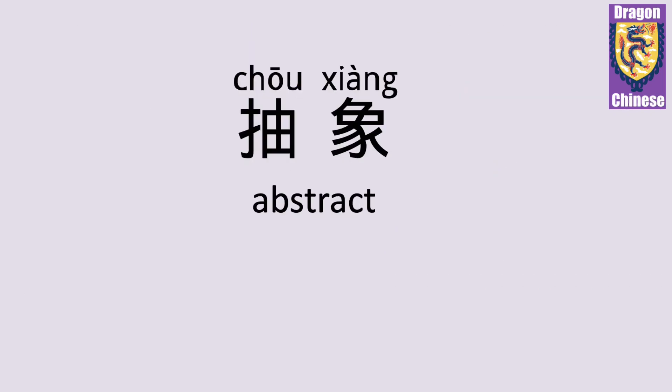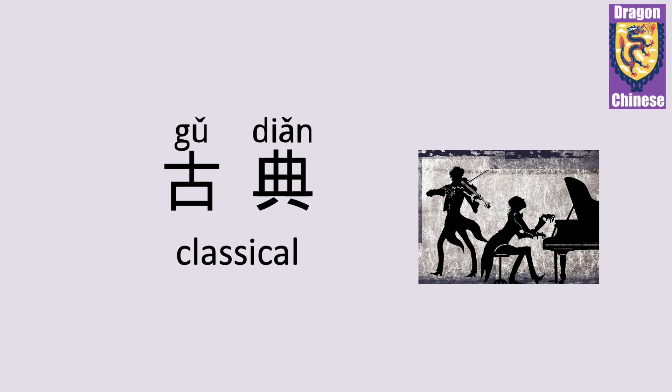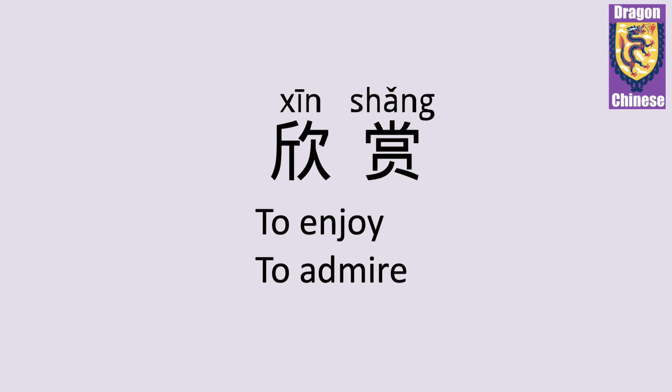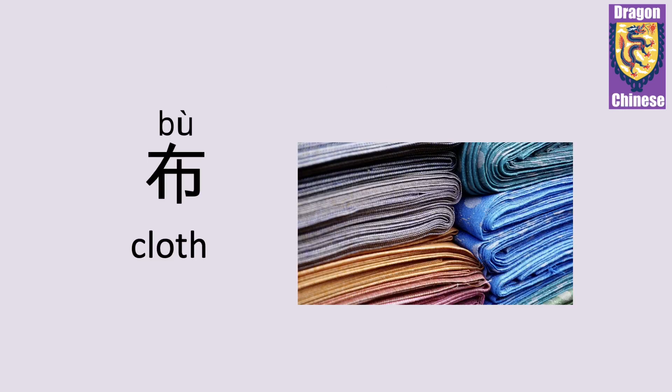抽象 — abstract. 抽象. 古典 — classical. 古典. 欣赏 — to enjoy, to admire. 欣赏.